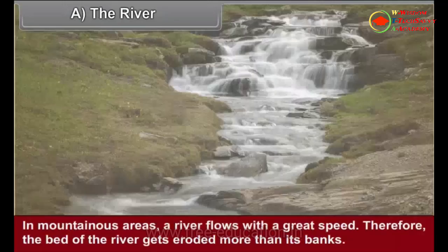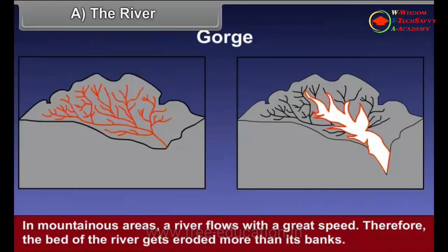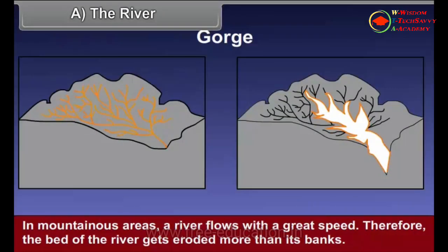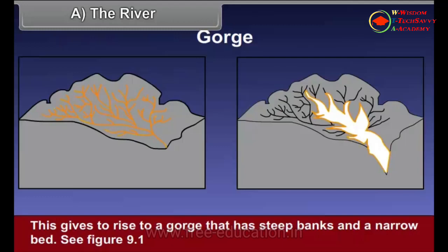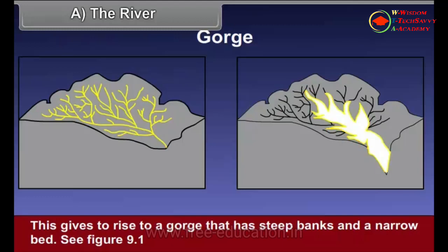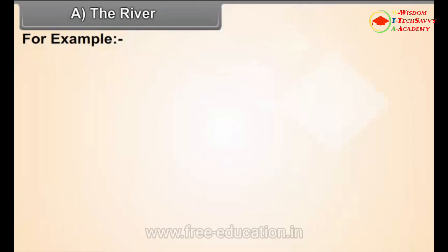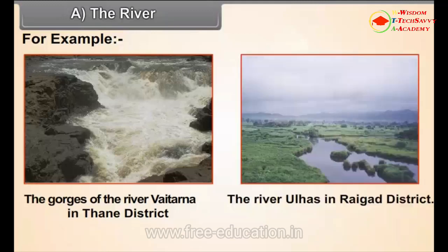Gorge: In mountainous areas, a river flows with great speed. Therefore, the bed of the river gets eroded more than its banks. This gives rise to a gorge that has steep banks and a narrow bed. For example, the gorges of the river Vaitarna in Thane district and the river Ulhas in Raigad district.